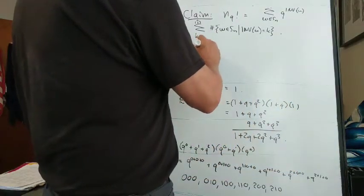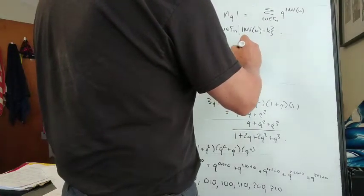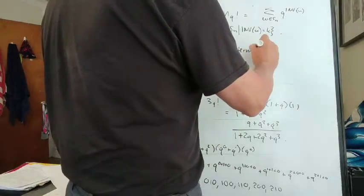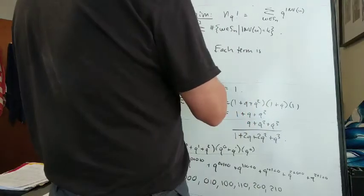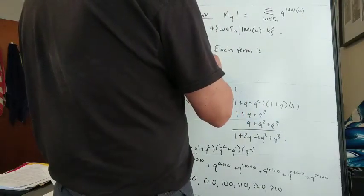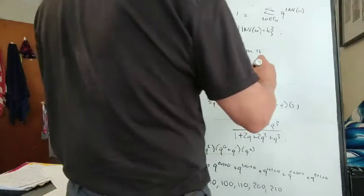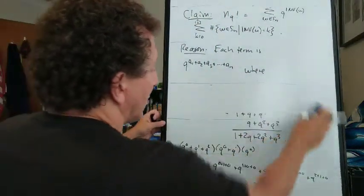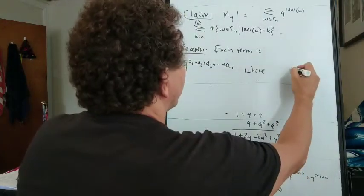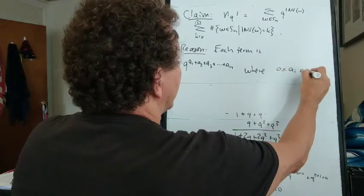And the reason to spell it out in general is that each term of quantum n factorial is q to the a1 plus a2 plus a3, etc., plus a n.